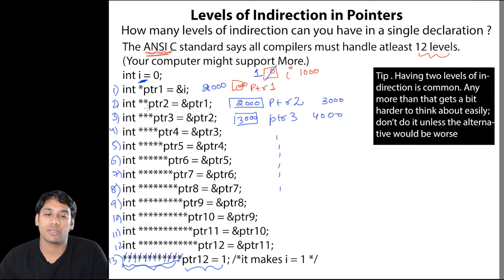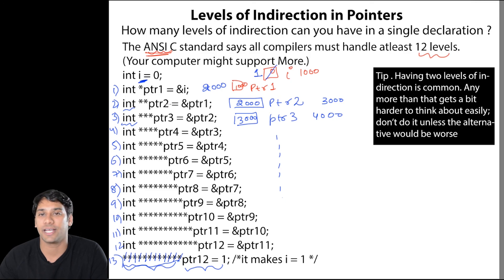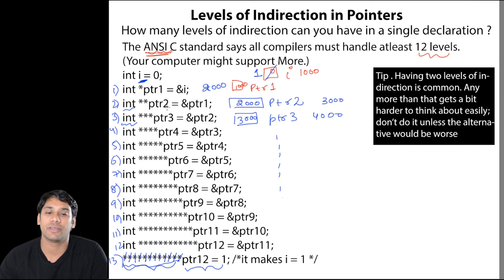But after two stars or three stars the things become very complicated. So it is not really suggested that you use multiple levels of indirection. You can use indirection to level 1 or level 2, but after that it is not really advisable.